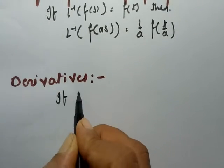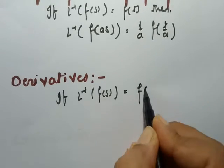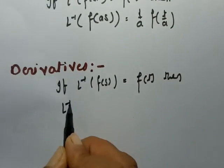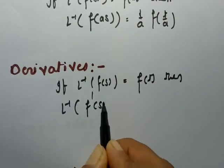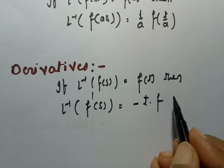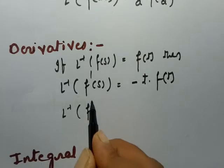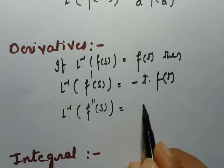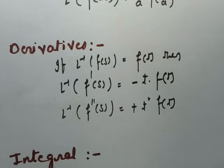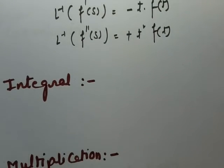When it comes to the derivative formula: if inverse Laplace transform of F(s) is equal to f(t), then the inverse Laplace transform of the first derivative F'(s) is equal to minus t times f(t). And inverse Laplace transform of the second derivative F''(s) is equal to plus t² times f(t). This is the formula to use for inverse Laplace transform involving derivatives.